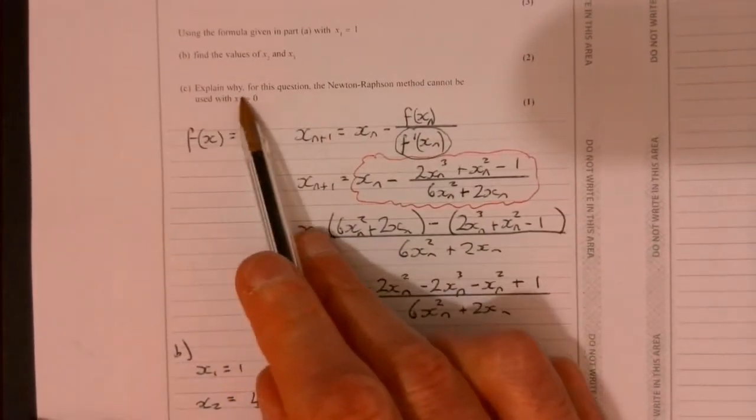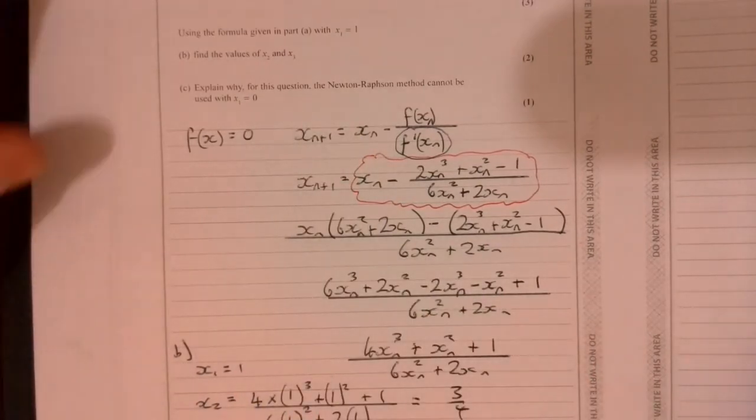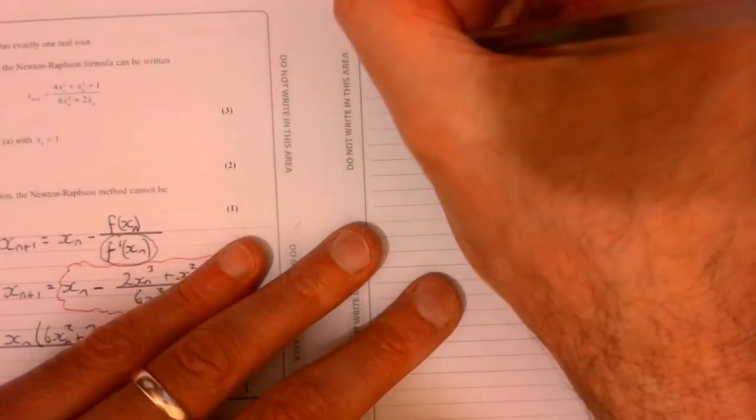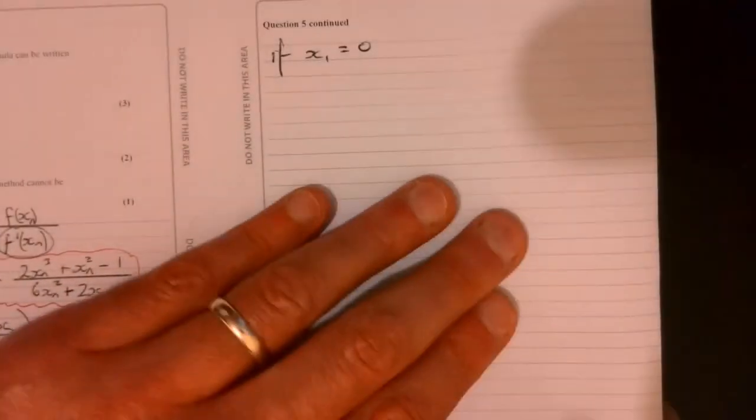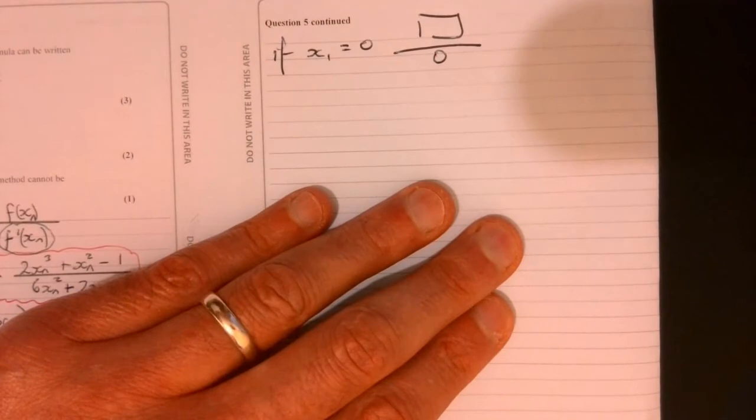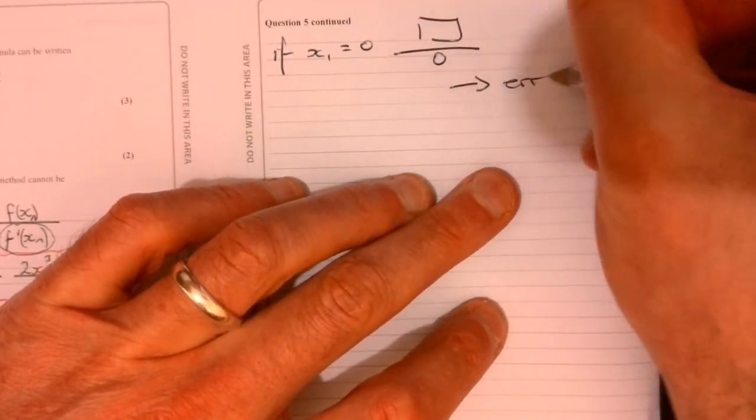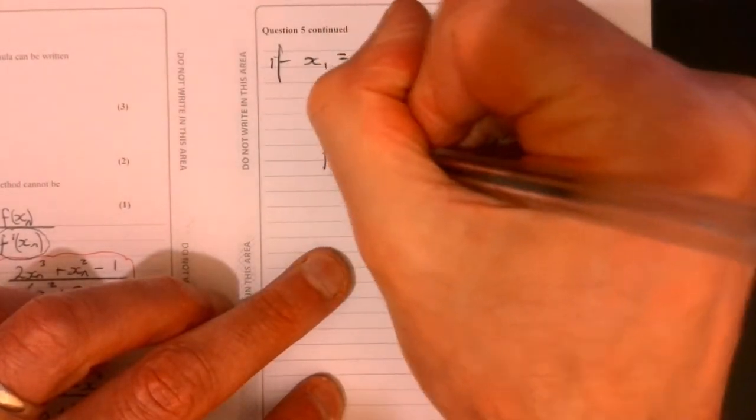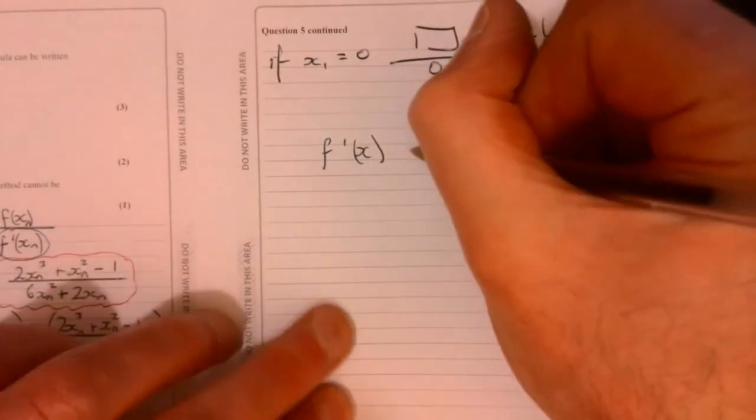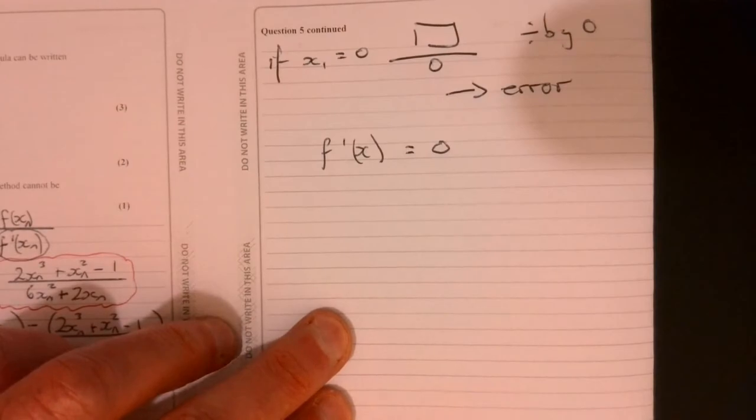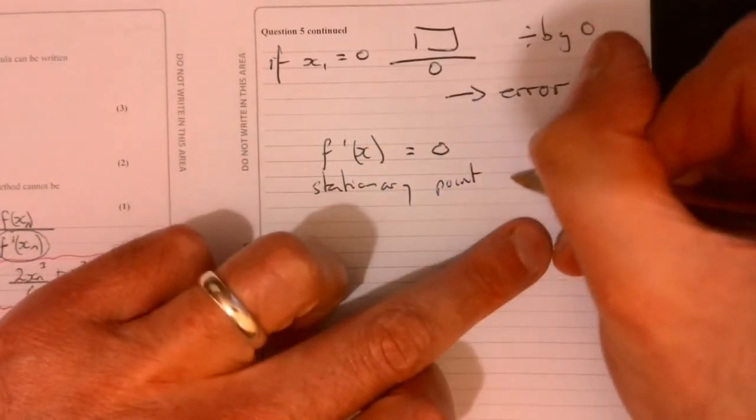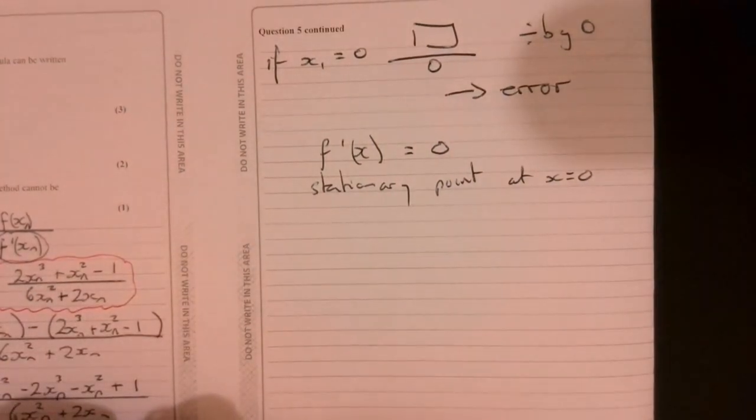Now, the last bit of the question says explain why for this question, the Newton-Raphson method cannot be used when x₁ is equal to 0. So the best way to actually think about that is let's just consider what we've got. Let's actually imagine if you were to put x₁ equals 0 into here, what would you get? Well, your denominator would be 0, wouldn't it? So you would have some number over 0. So we can't have that. So that would lead to an error because you're trying to divide by 0. It doesn't make sense. In other words, what you cannot have is you can't have the derivative of our function being equal to 0. In other words, it's a stationary point. Let's just pop that in there. It's going to be a stationary point at x equals 0. So it won't work.